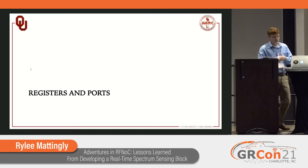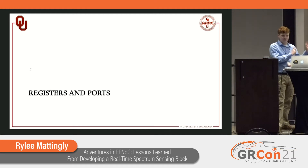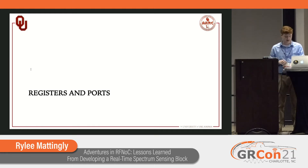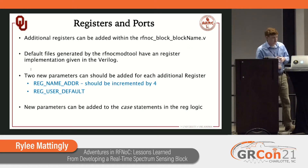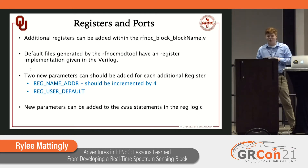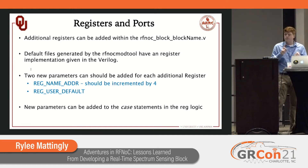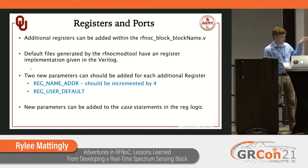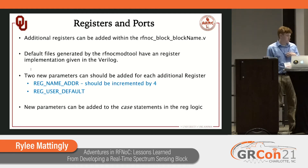We now have our Verilog files in the state we want. We can take our module and put it at the bottom of the rfnoc_block_blockname.v file. We can add registers and ports inside the Verilog file. There was a really nice register implementation for a default register at address zero. We can create another register by instantiating the hardware register and setting the parameters. For your address, you want to increment by four because the registers are 32 bits — so we increment by four and set a default value.